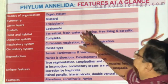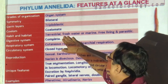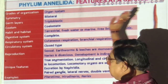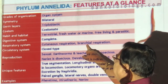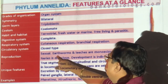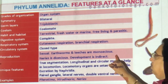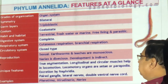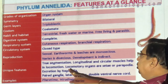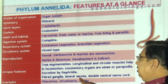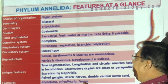Revision of Annelida: organ system, bilateral symmetry, three germ layers, true coelom formed by mesoderm. Terrestrial, freshwater, or marine; free-living or parasitic. All are segmented. Complete digestive system with mouth, anus, and organs. Cutaneous or branchial (gill) respiration. Closed circulatory system with heart and blood vessels. Sexual reproduction: earthworm and leech have separate male/female; Nereis is hermaphrodite. Development as larvae. True metamerism with internal segments, longitudinal and circular muscles, chaetae or parapodia for movement. Excretion by nephridia. Paired ganglia and double ventral nerve cord. Examples: Pheretima, Hirudinaria, Nereis.